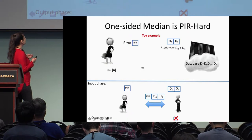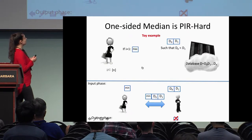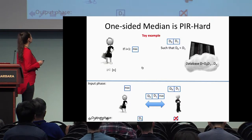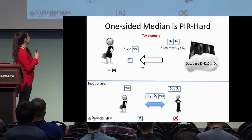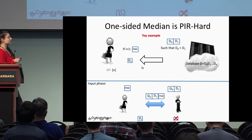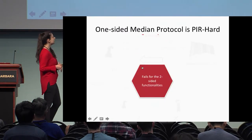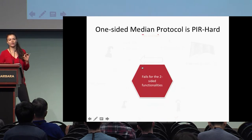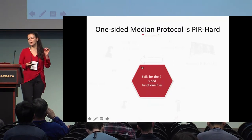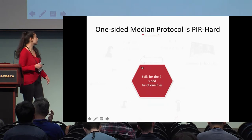Likewise, if i refers to the second element, we put the max element in the field, so d1 becomes the median element and the protocol gives d1 to Alice. For the generic case with many entries in the database, the client makes the set such that the median element is the element it wants from the database. Note that this reduction completely fails in the two-sided case, because if the server receives d0 and d1, he can see what index the client asked for.